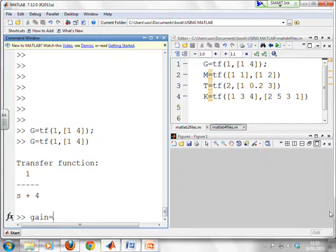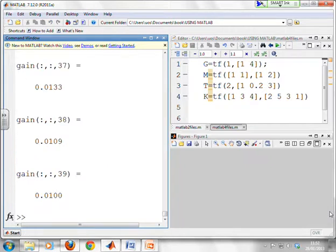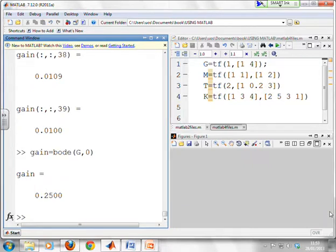Let's see what happens if I use the bode command. I write gain equals bode brackets G. Oops. Something's gone wrong there. Sorry. I forgot to put comma 0. Gain equals bode G, 0. And what do you see? You get 0.25 as expected.